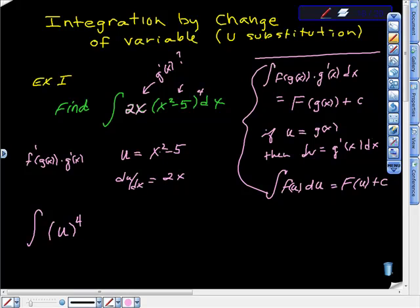U to the fourth. Because I said here that U is x squared minus 5. So U is that piece right there, isn't it? So here's my U to the fourth, right? But that leaves me with this 2x here, 2x dx.